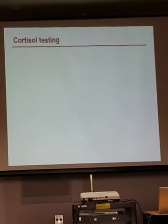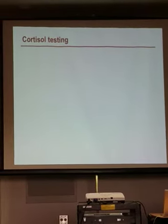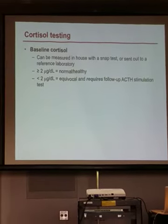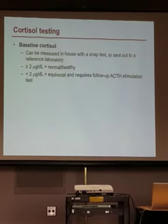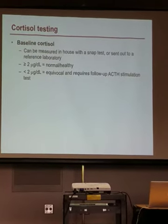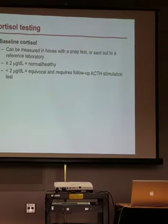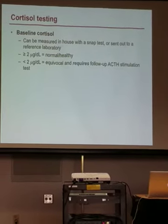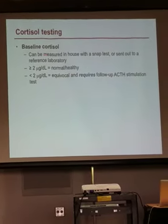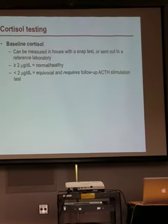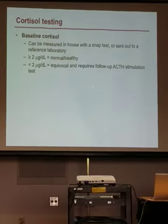Cortisol testing is not done routinely, but can be indicated if a dog has specific clinical signs consistent with Addison's disease. The first cortisol test is a baseline cortisol. Most veterinarians can measure this in-house with a snap test — a quick and easy test run in clinics — or it can be sent out to a reference laboratory. If the cortisol is greater than two, the dog is normal and does not have Addison's disease. However, cortisol levels can fluctuate throughout the day.